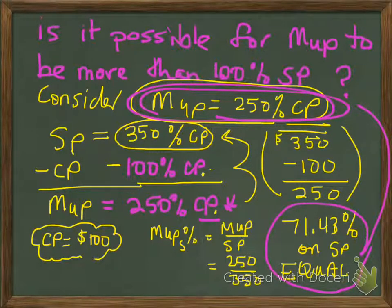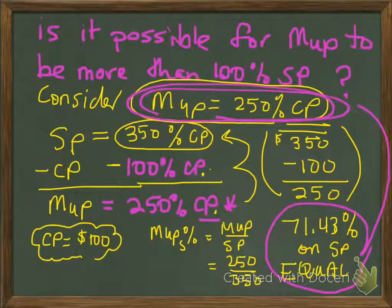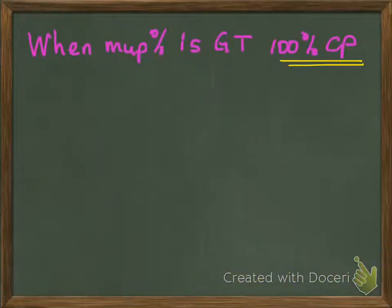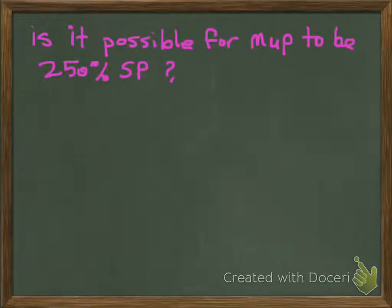So we know that we can have a markup that is more than 100% if the markup is based on cost. The markup can be greater than 100% if it's based on cost. Now, what happens — is it possible for markup to be more than 100% if it's based on selling price? That's my next question.